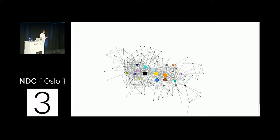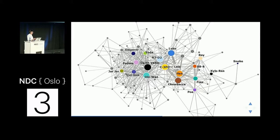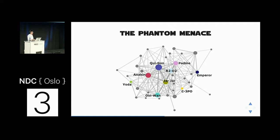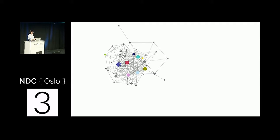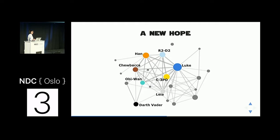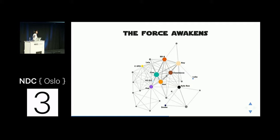We can look at episodes individually. Episode 1 of the prequels is quite densely connected with several main characters — Qui-Gon, Anakin, Jar Jar. When we compare with Episode 4, the original Star Wars, the network is much sparser with only a few major characters connected to each other. And in Force Awakens the social network is bigger but not as many characters as in the prequels. That already tells us something about the structure of the story and how understandable it probably is.